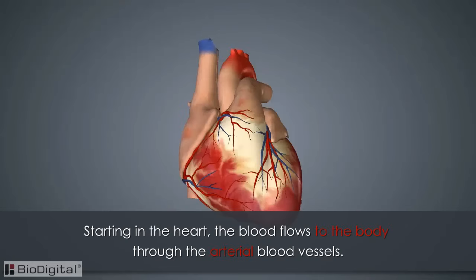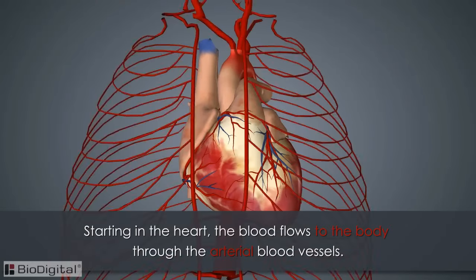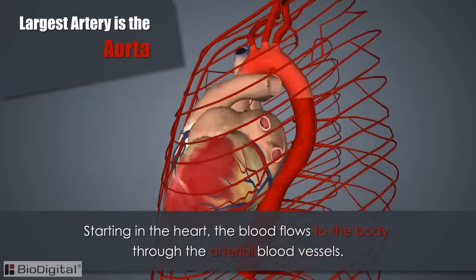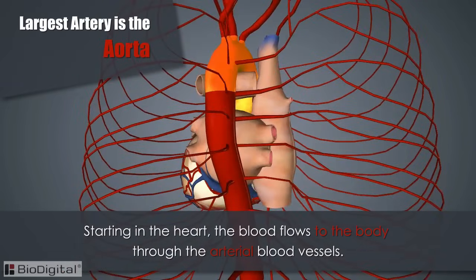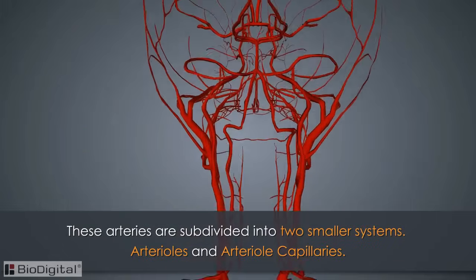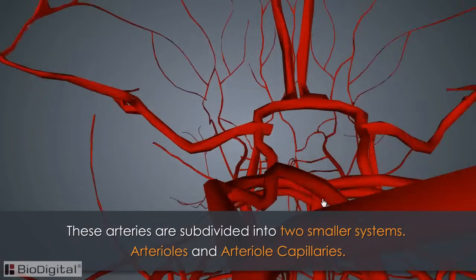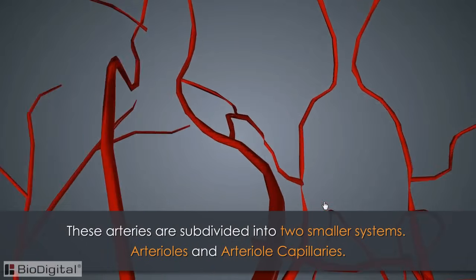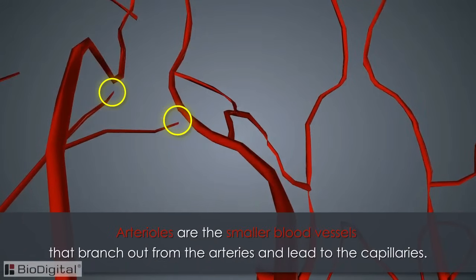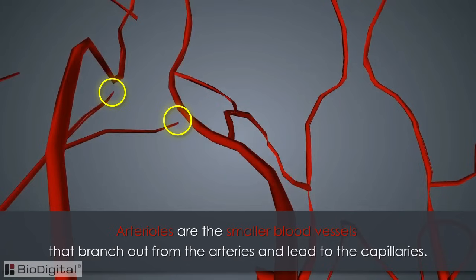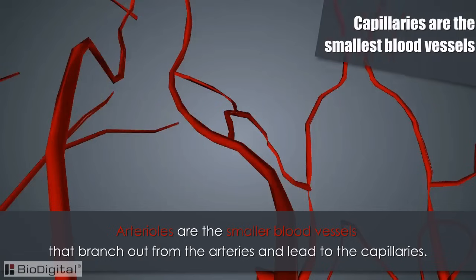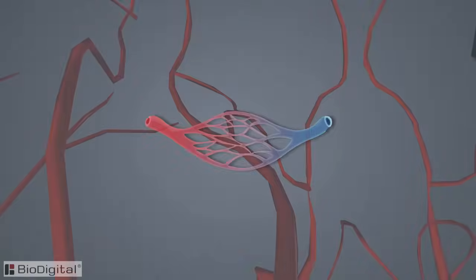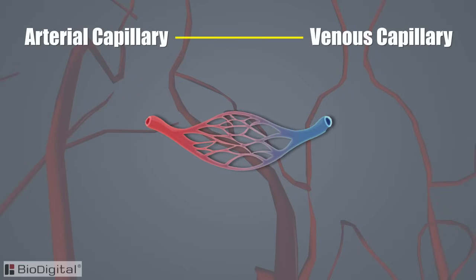Starting in the heart, blood flows to the body through arterial blood vessels. The largest of these arteries is known as the aorta. Arteries are further divided into arterioles and arterial capillaries. Arterioles are smaller blood vessels that branch out from larger arteries and lead to the arterial capillaries, which are the smallest blood vessels in the body. The arterial capillaries are connected to the venous capillaries.